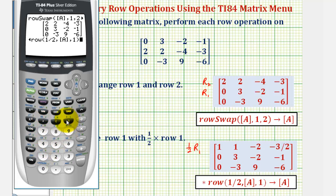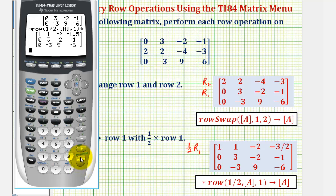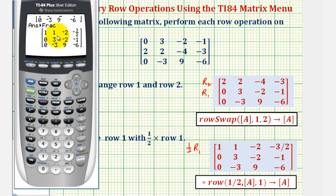Close parenthesis. We want to store our new matrix again in matrix A, so we'll press store, second, matrix, enter, and enter. Notice how it gave us a decimal for the fraction value — we'd press math, enter, enter to convert. And notice how one-half times row one is the same as the expected result.